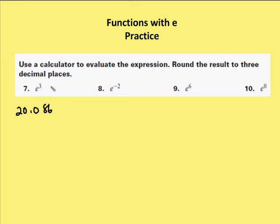So, e, again, is just a value, 2.718. You're going to take that to the 3rd power. Now, I'm going to take e to the negative 2. And I get a result of 0.135.